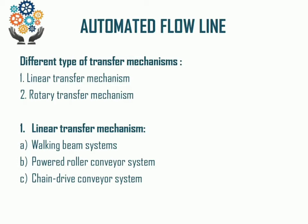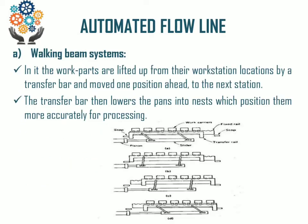The walking beam mechanism: as you can see in the diagram, the work parts are lifted from one work station to another work station by the transfer beam and moved one position ahead to the next station. The transfer bar then lowers the part into the next position, positioning them more accurately for processing. This kind of walking beam mechanism was conventionally used in automated flow lines before powered automated flow line mechanisms were developed.